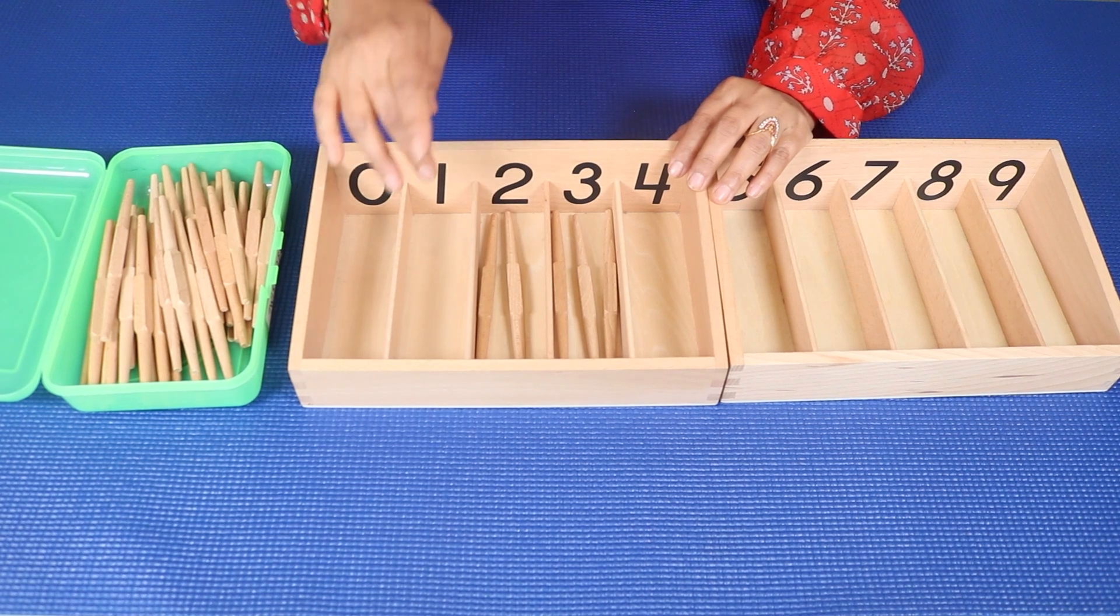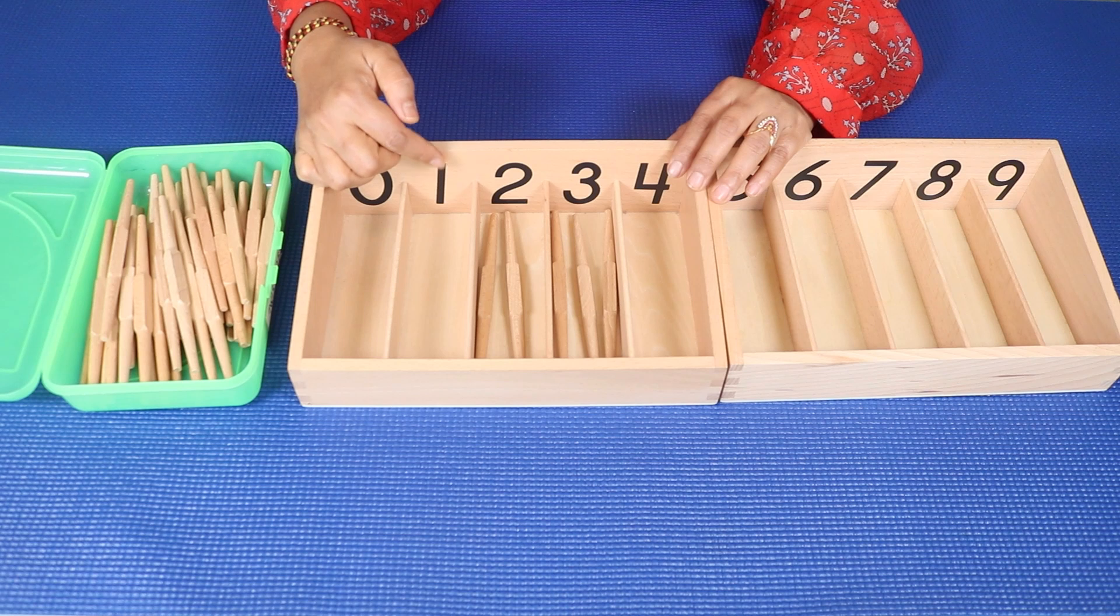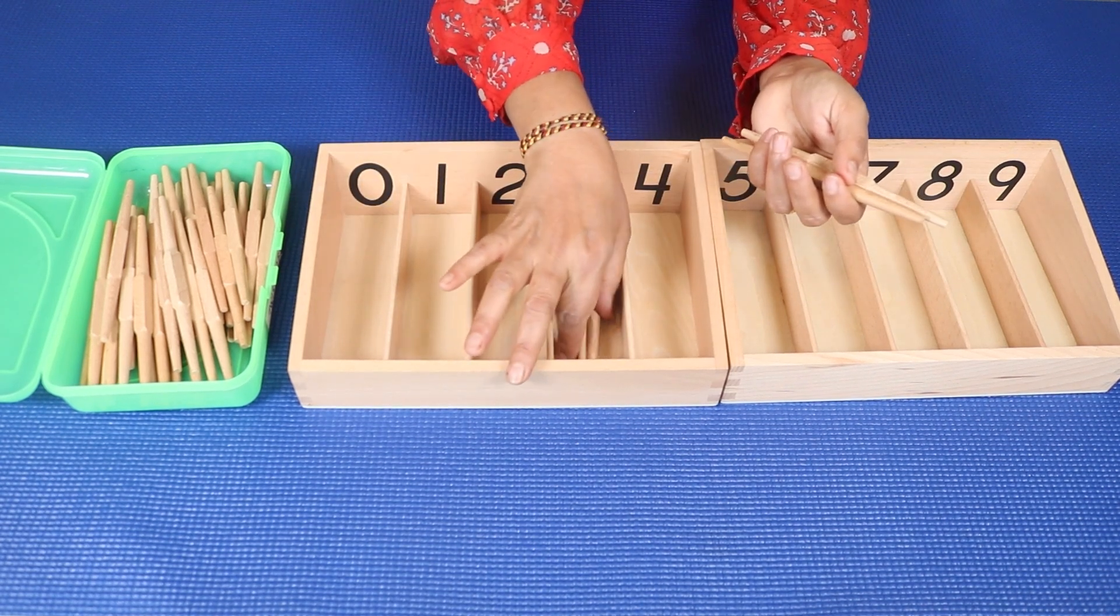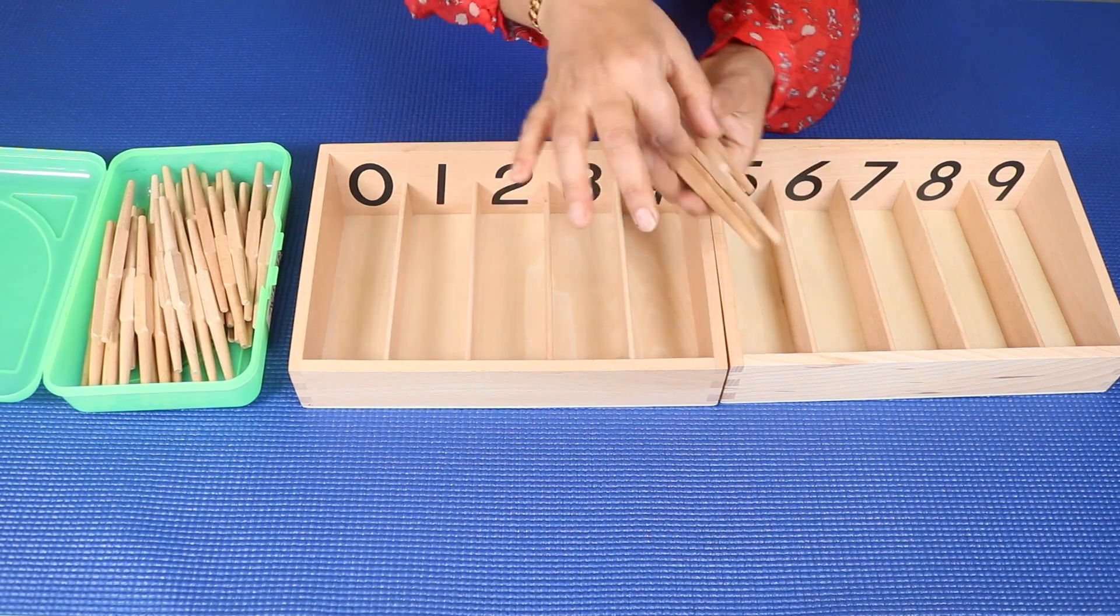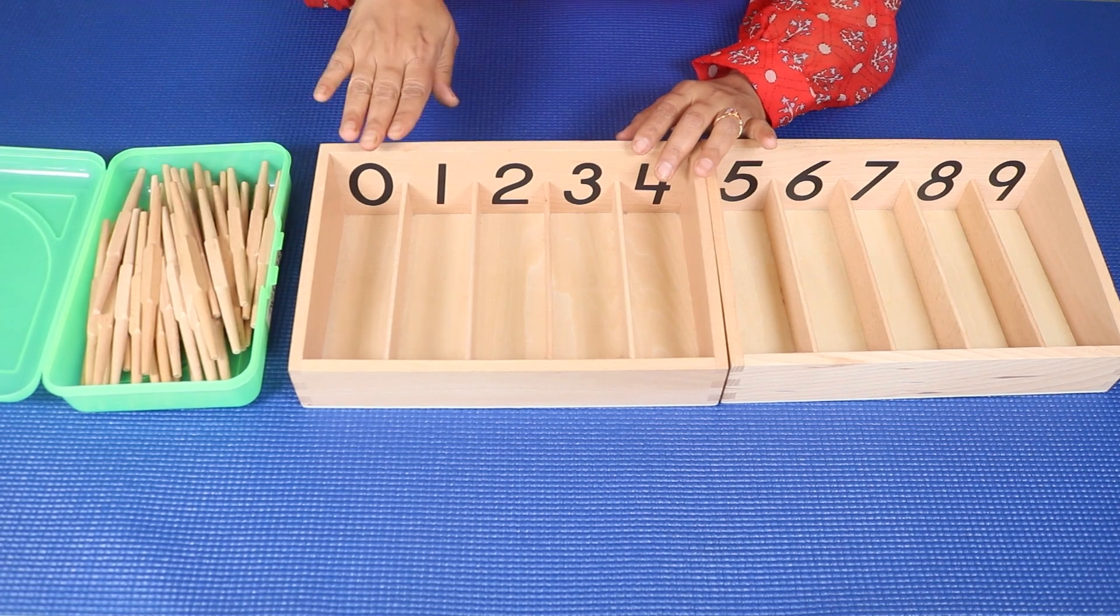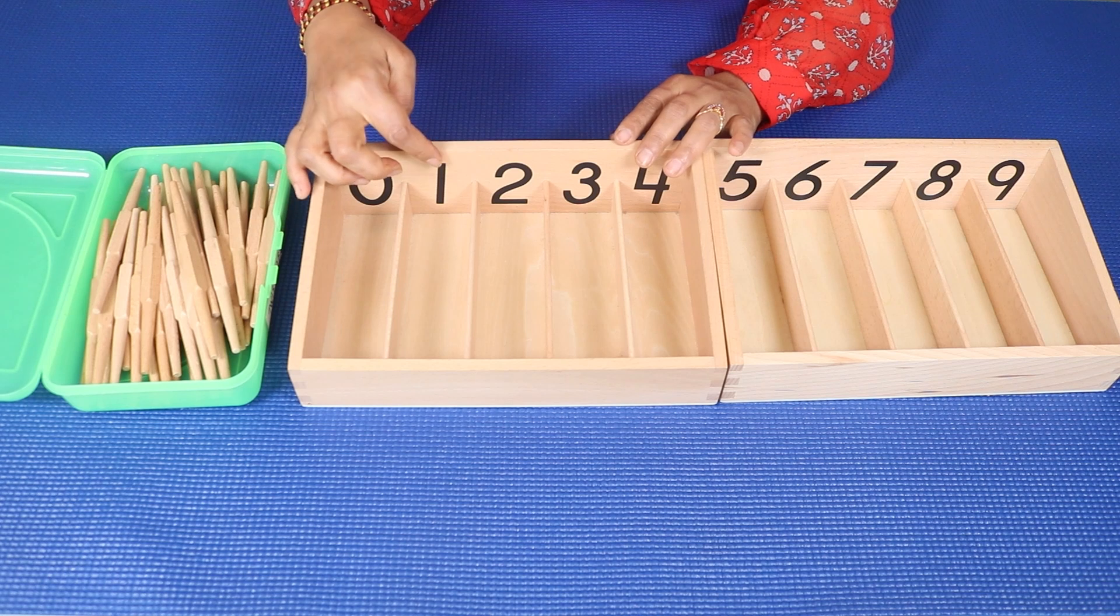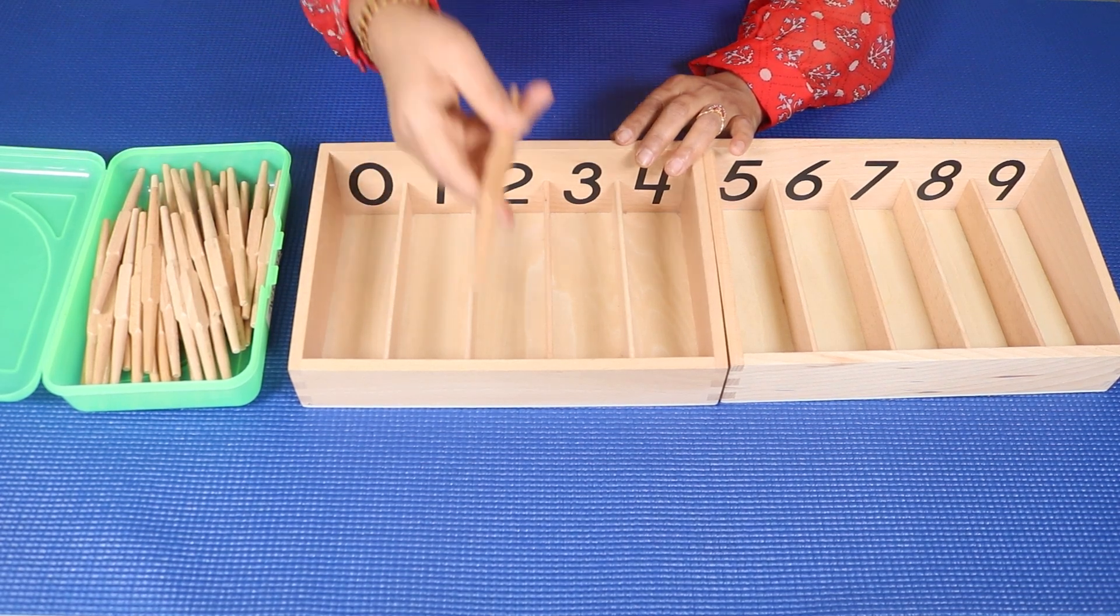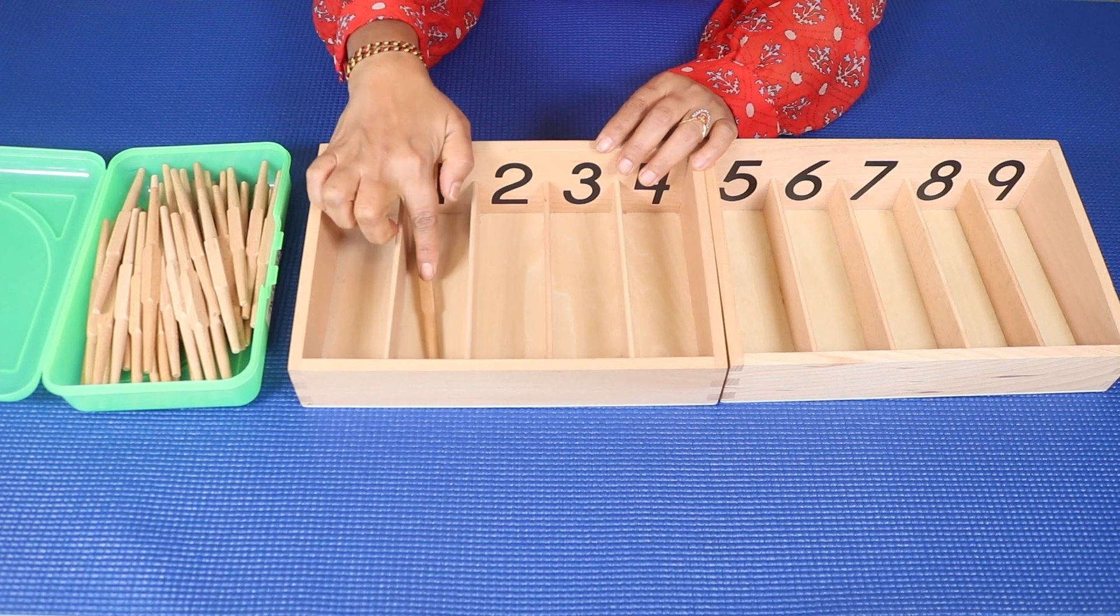Then you can go to the next number. Ask your child what is this number. If your child says one, then hand the spindle to your child's hand and ask her to put it. So this is one, one spindle.